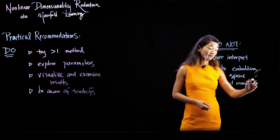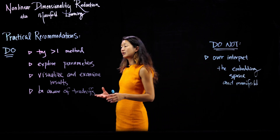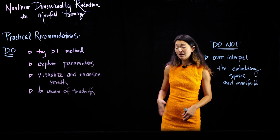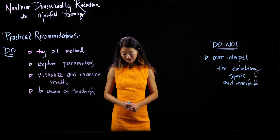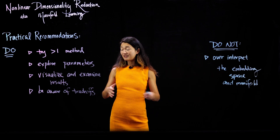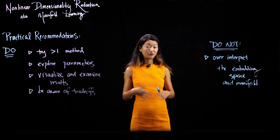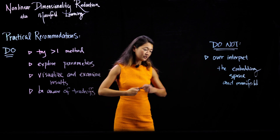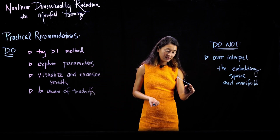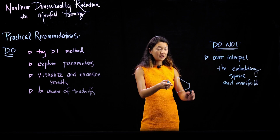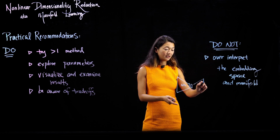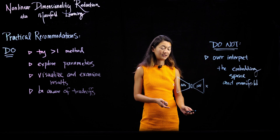So over-interpreting the embedding space is the only thing you should be wary of avoiding. If you follow these practical recommendations — trying things and exploring your data — these can be really powerful and commonly used tools for learning from high-dimensional data sets. All the methods discussed so far do not involve neural networks. There are neural network approaches for nonlinear dimensionality reduction: the idea is that you take a high-dimensional data set and use a neural network to constrain it into a low-dimensional space using what's called an autoencoder architecture.